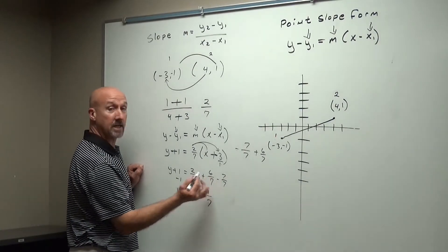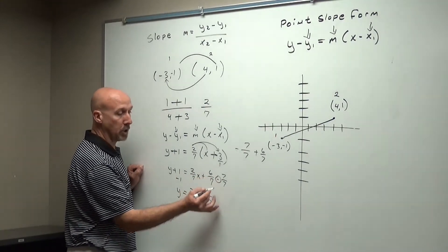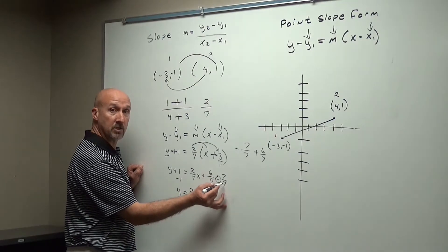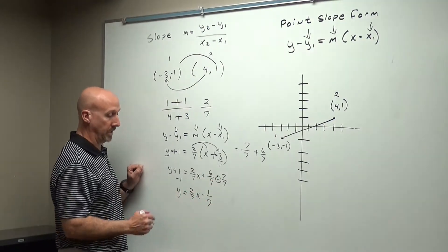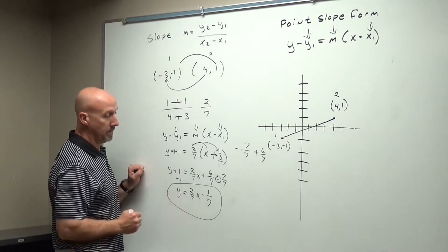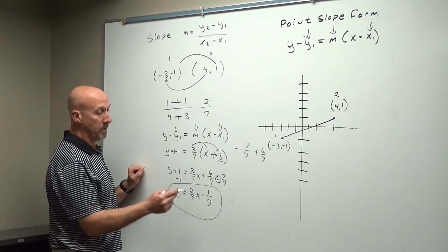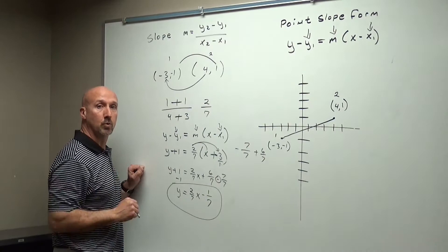But if we have different signs, we subtract. Sign goes to the larger number. 7 over 7 is larger. It has the negative in front of it, so we're going to use the negative. This is my equation in slope-intercept form that has a fraction. Let's do one more.